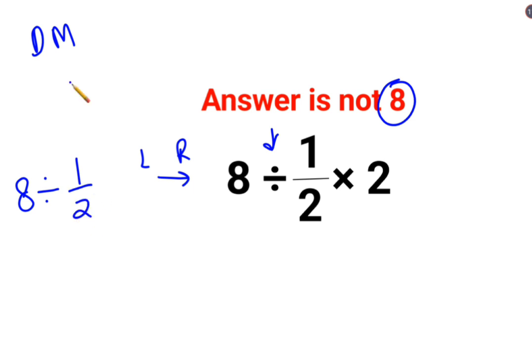Here, whenever you have division, you follow the rule of KCF where K stands for keeping the first number as it is. C stands for changing the division sign to multiplication. F stands for flipping or taking reciprocal of 1 by 2 which is 2.